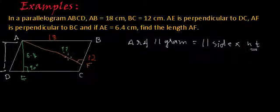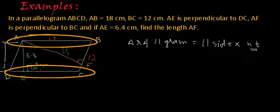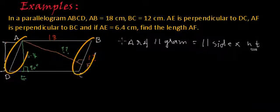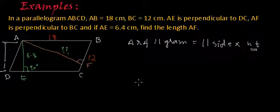If we are taking AB or DC as one of the parallel sides, then AE will be the height of the parallelogram. So in a parallelogram, we have two sets of parallel sides, one is AB and DC. Another set is AD and BC. So if I take AB and DC, area of the parallelogram will be length of AB is 18 multiplied by height, it is 6.4.